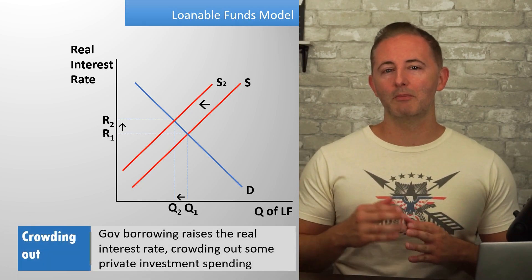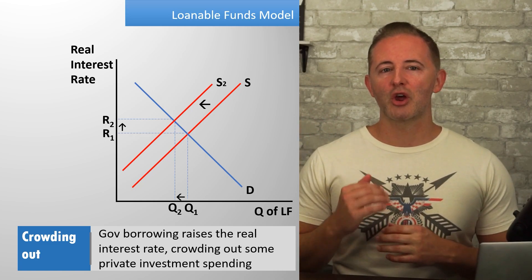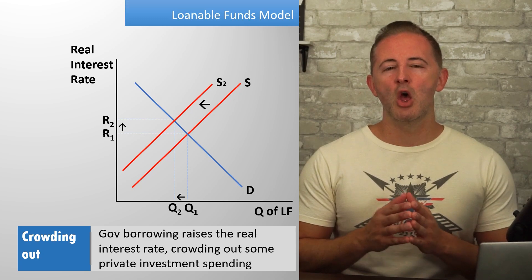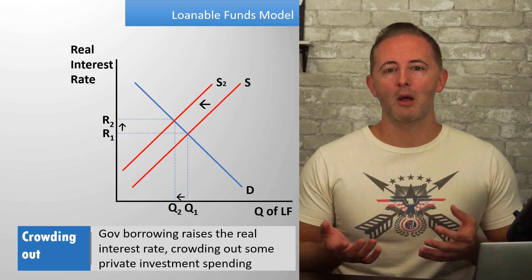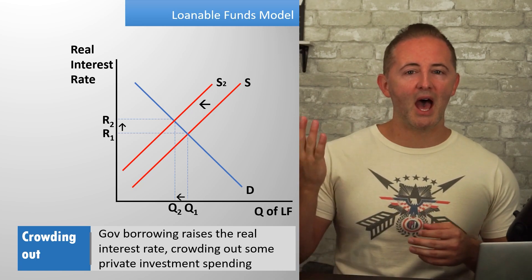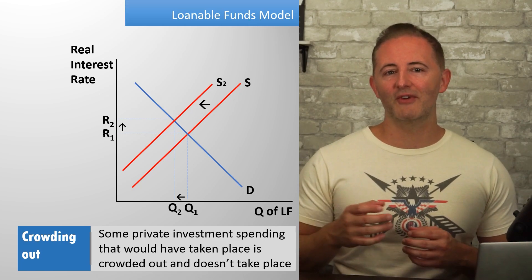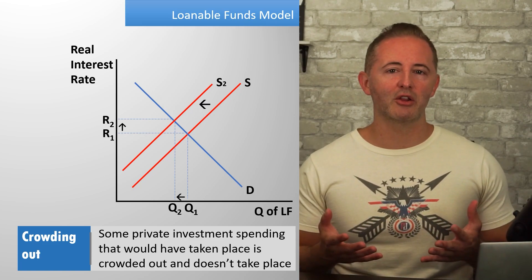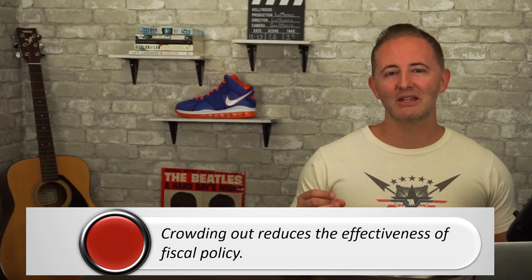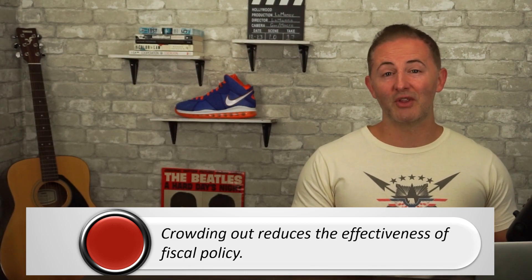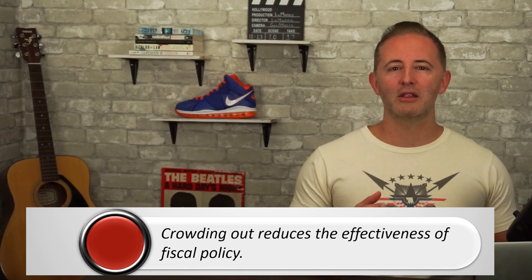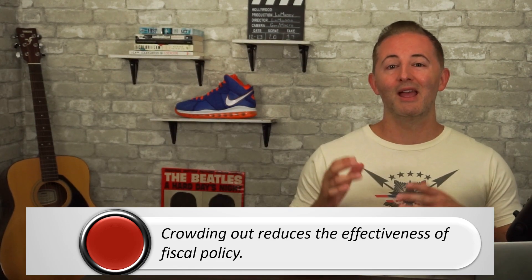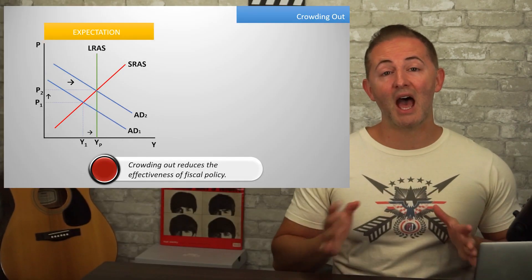Crowding out refers to the fact that increased borrowing by the federal government has pushed up the real interest rate, crowding out private investment spending. Businesses are more likely to borrow money to engage in investment spending when interest rates are lower because the dollars are cheaper and it promises a higher rate of return. So when interest rates are forced higher as a result of increased government borrowing, some private investment spending that would have taken place is now crowded out. One consequence is that it makes expansionary fiscal policy less effective — the goal is to shift AD to the right, but since investment spending decreases, the crowding out causes a smaller than intended shift of the AD curve. Depending on how sensitive AD is to the higher real interest rate, it's possible the decrease in investment spending could offset the entire increase in AD.